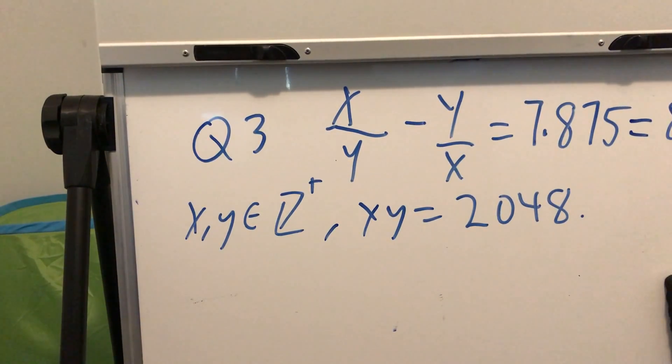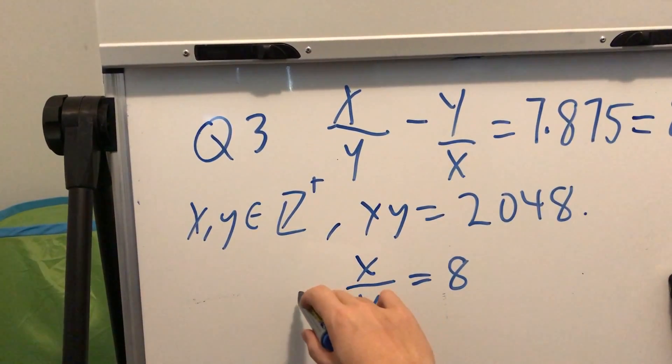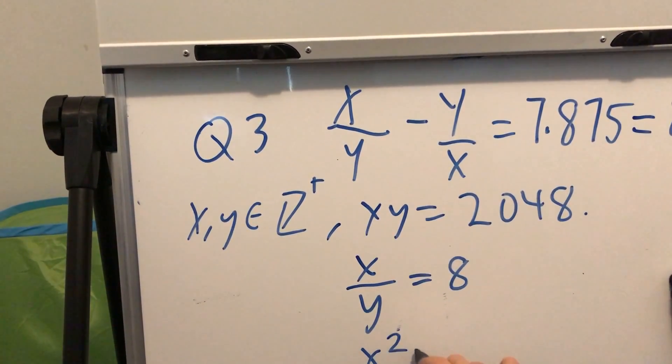You could take a guess that x/y was equal to eight, and if that's your guess, you can multiply it by xy to get x squared equals eight times 2048.